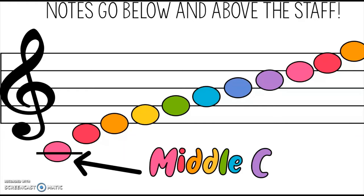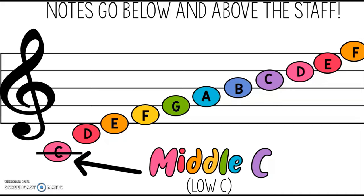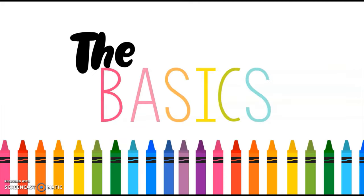We also know that notes go below and above the musical staff. We'll start here with middle C. Middle C will always have a line in between it, just like that. You'll also hear me call it low C when I'm talking about the recorder. Then D, and then our pattern starts over — E, F, G, A, B, C, D, E, F. The lines are E, G, B, D, F — Every Good Boy Does Fine — and the spaces spell FACE.